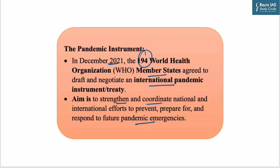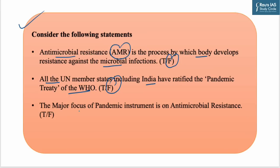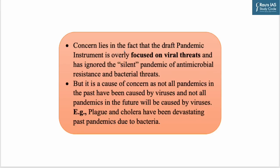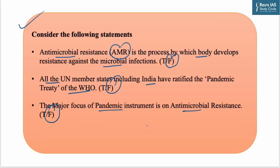The second statement: all UN member states including India have ratified the pandemic treaty of the WHO. This is also false — in December 2021, 194 WHO member states agreed to draft and negotiate an international pandemic instrument or treaty. It aims to strengthen and coordinate national and international efforts to prevent, prepare for, and respond to future pandemic emergencies. The third statement: the major focus of the pandemic instrument is on antimicrobial resistance. This is also false — the concern is that the draft pandemic instrument is overly focused on viral threats and has ignored the silent pandemic of antimicrobial resistance and bacterial threats. Not all past or future pandemics are caused by viruses — plague and cholera have been devastating pandemics caused by bacteria. So all three statements are incorrect.